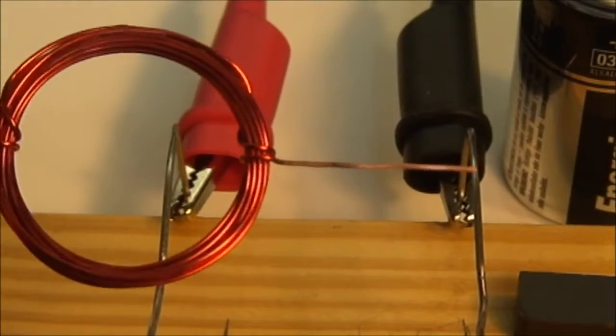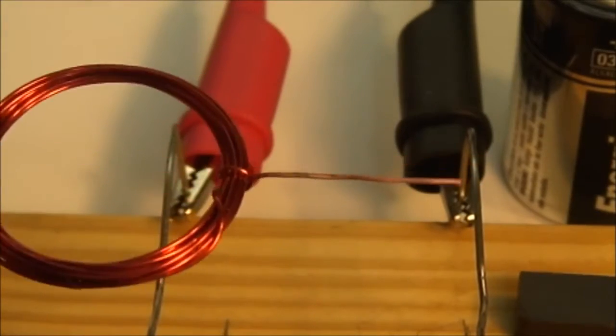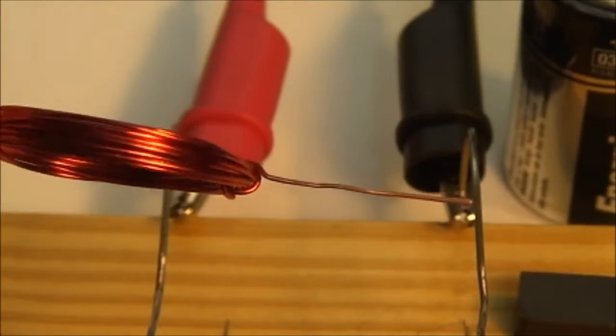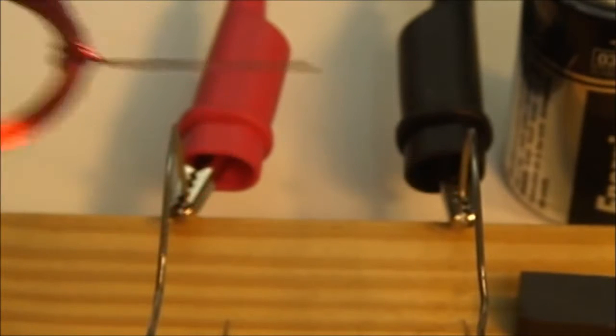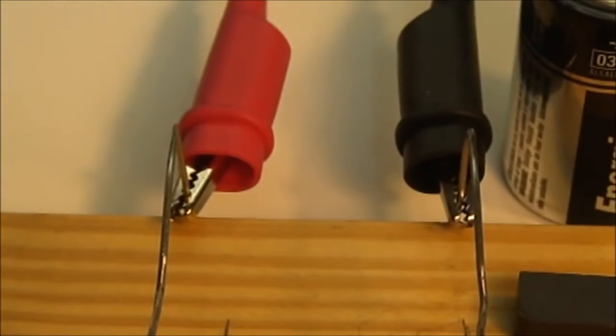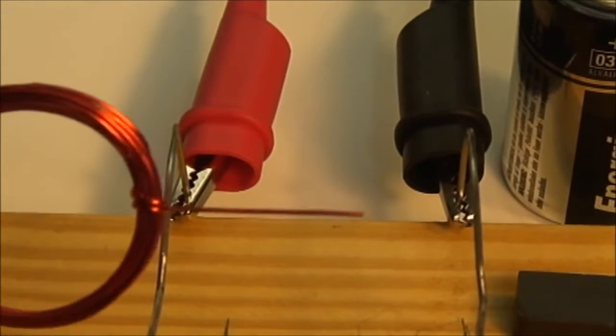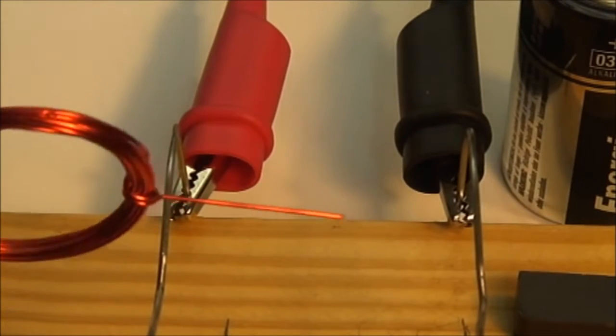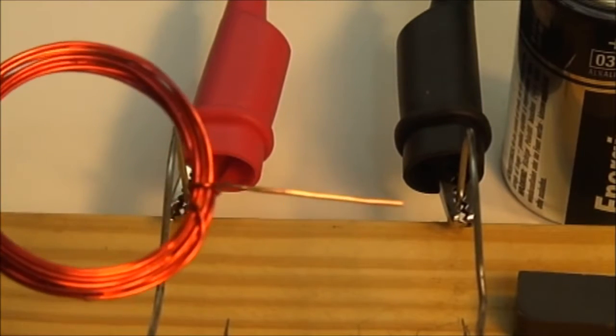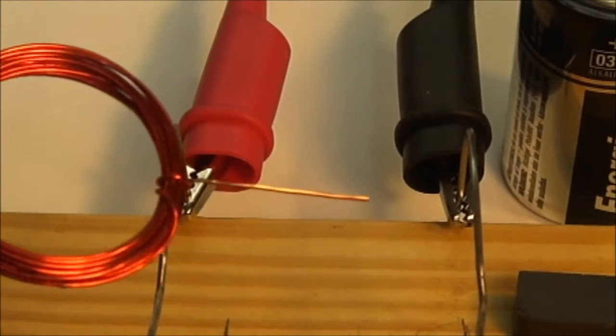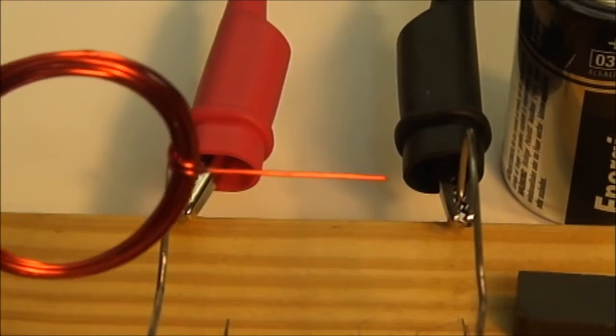I prepared the copper coil by removing the insulation all the way around on one side where the axle is going to be. The other side was prepared by removing the insulation from just one side. So one side has bare copper and the other side has insulation.